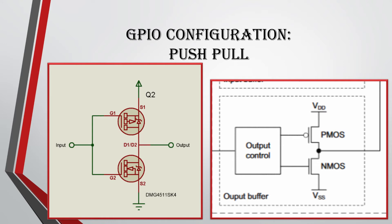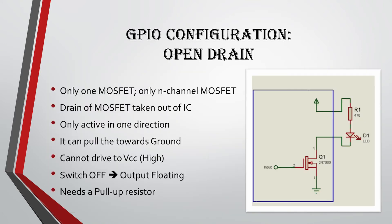In open drain GPIO configuration, only one MOSFET is present — the N-channel MOSFET. The drain of the N-channel MOSFET is taken out of the IC. This configuration is active only in one direction: it can pull the output towards ground, but it cannot drive it high. When the N-channel MOSFET switch is off, the output is floating. When the switch is on, the output is connected to ground through the N-channel MOSFET, providing a path for current to flow. This configuration needs a pull-up resistor connected externally.